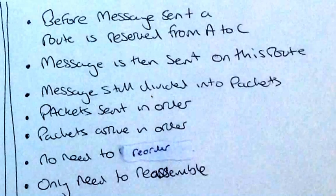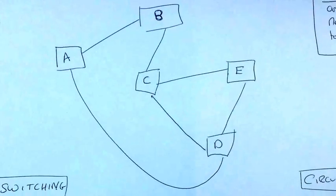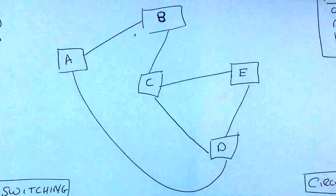The message is then sent on this route. The message is still divided into packets. The packets are sent in order this time, though. That means they arrive in order, which means there's no need to reorder the packets at the end. All you need to do is reassemble them. So packet 1 will be sent, then packet 2 will be sent, then packet 3 will be sent. Packet 1 comes in, packet 2 comes in, packet 3 comes in. We've already got them in order. We don't need to do anything with them. We've received the data. And that's all circuit switching is, quite simply.